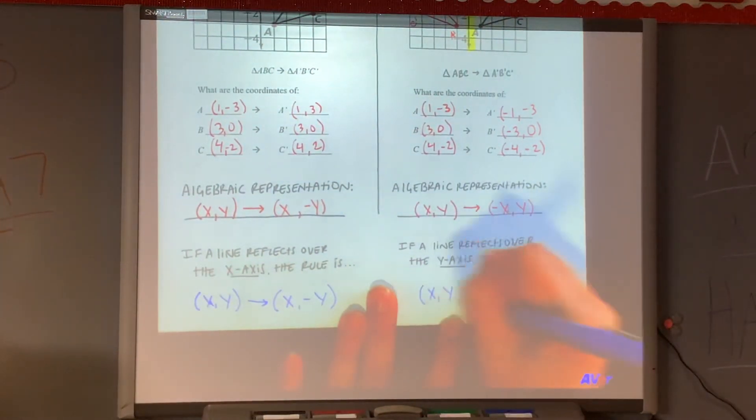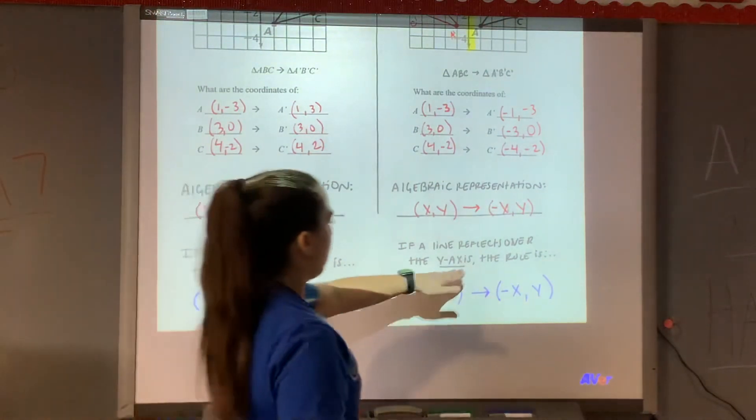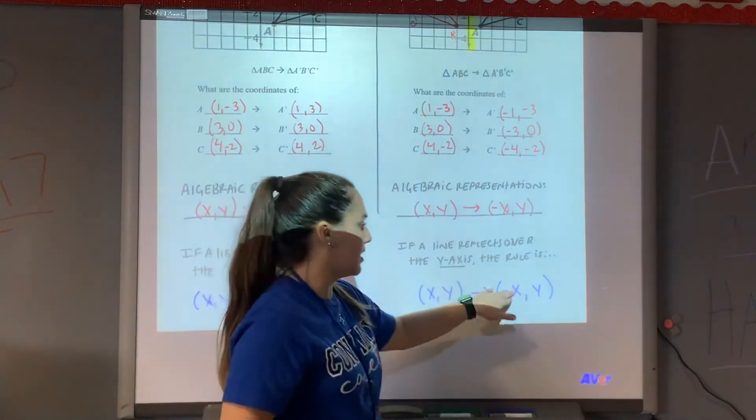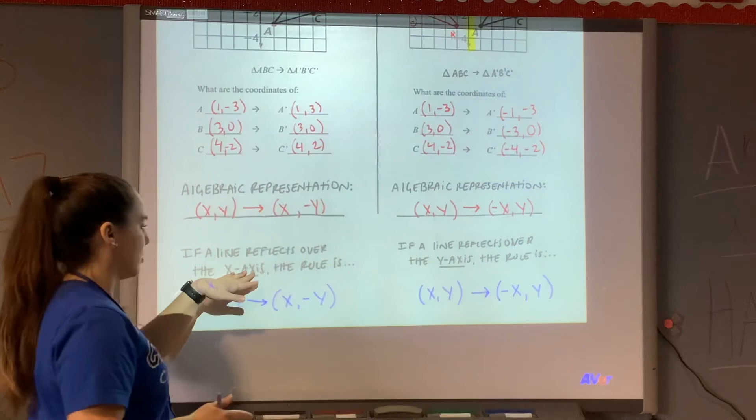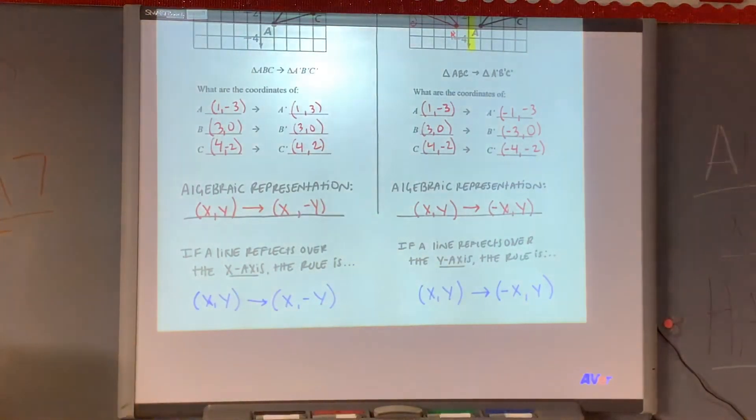So let's talk about the y-axis again. It looks like y-axis changes to (-x, y). So if you want to memorize it, you have a y-axis reflection, the x gets a negative. When you have an x-axis reflection, the y gets a negative. And that is how you do reflections. Thank you.